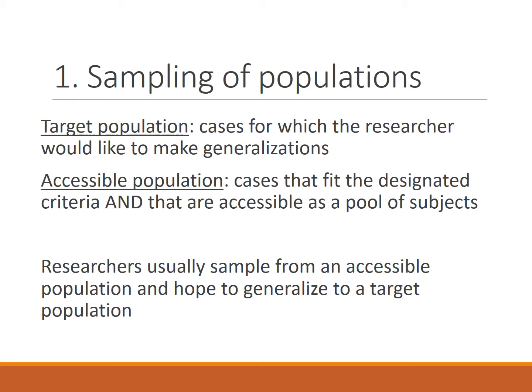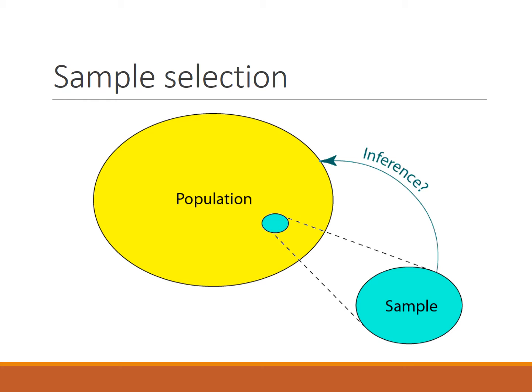The accessible population is who actually fits our criteria for entry into the study and who's accessible as a pool of subjects. Sometimes those two populations are not actually the same, but we hope they are close enough that when we're comparing the accessible population or the sample in our study to the target population, it is close enough. When we take a sample from the population to do our research study, we assume that we can infer those results back to the entire population.